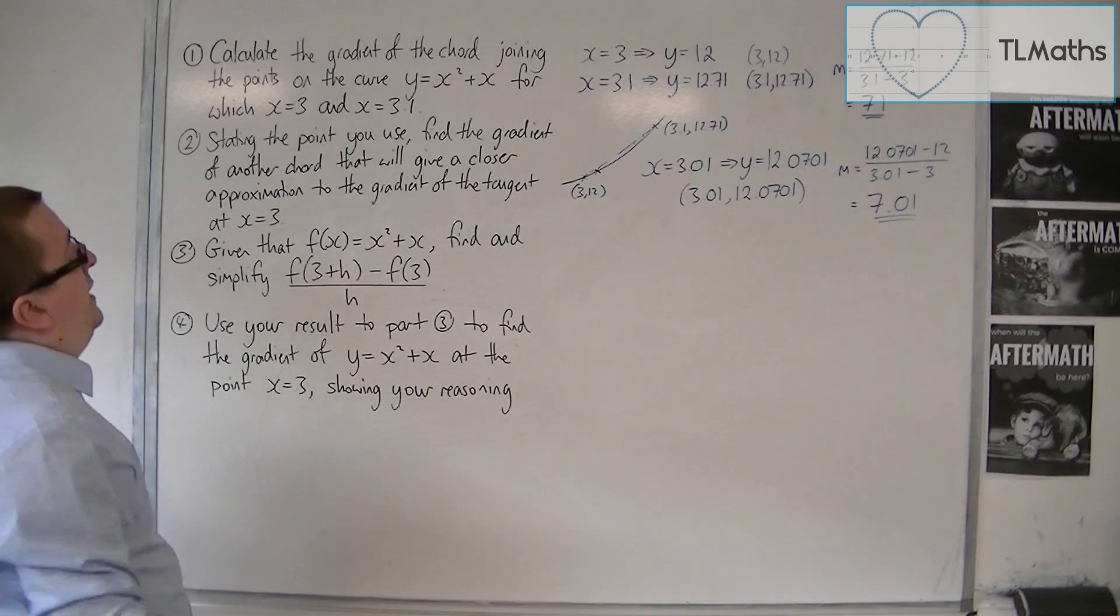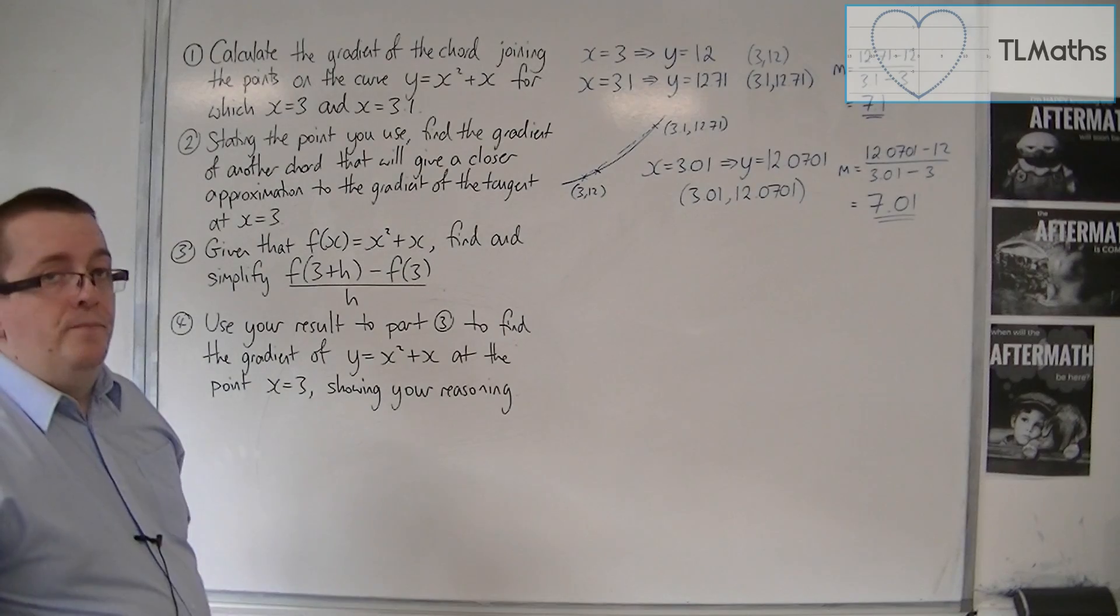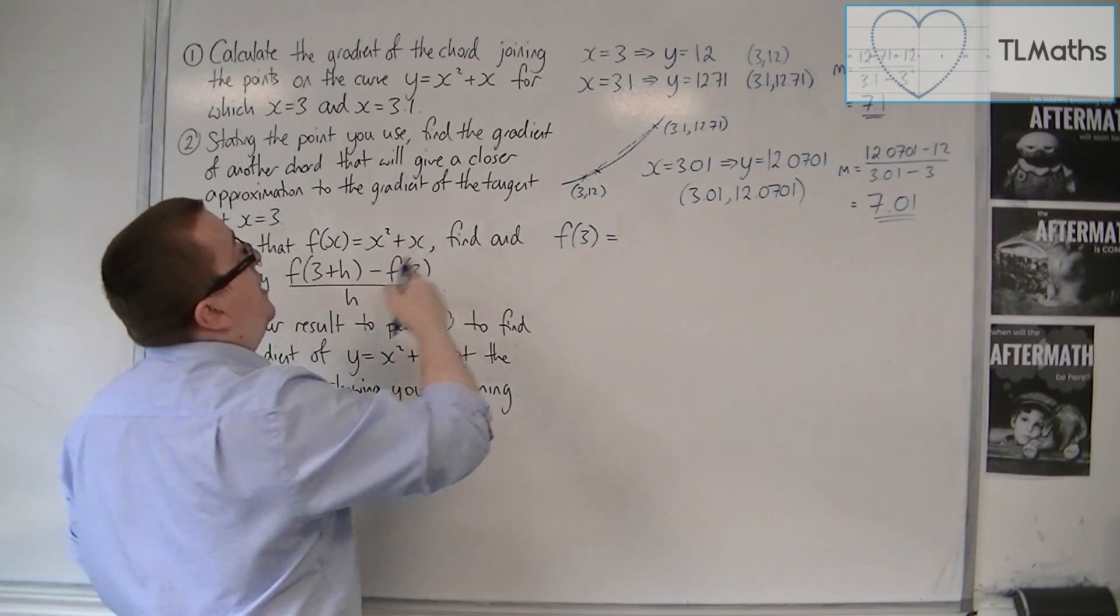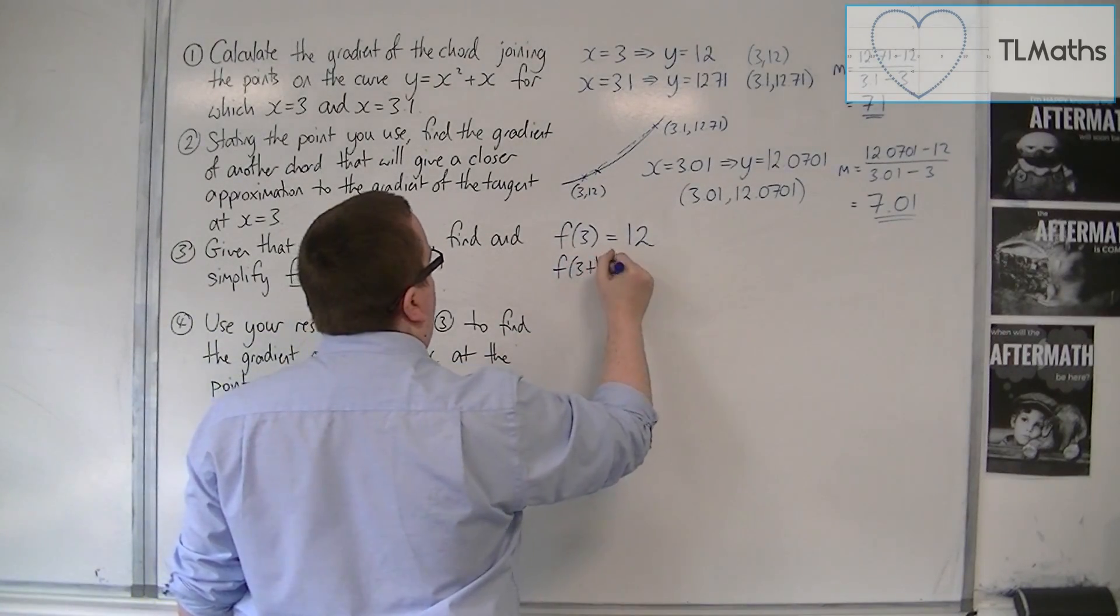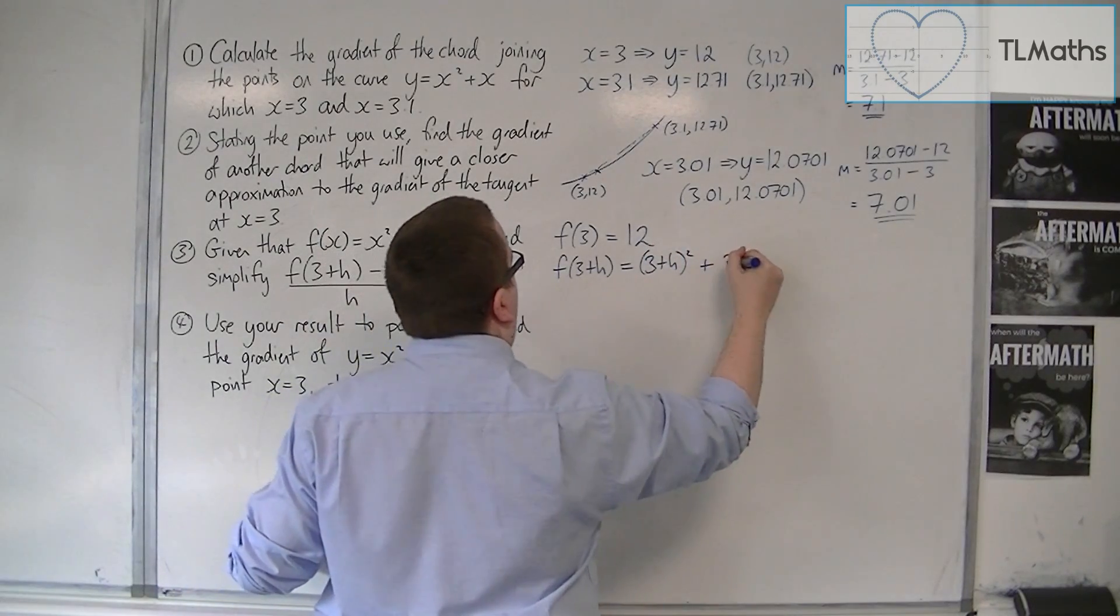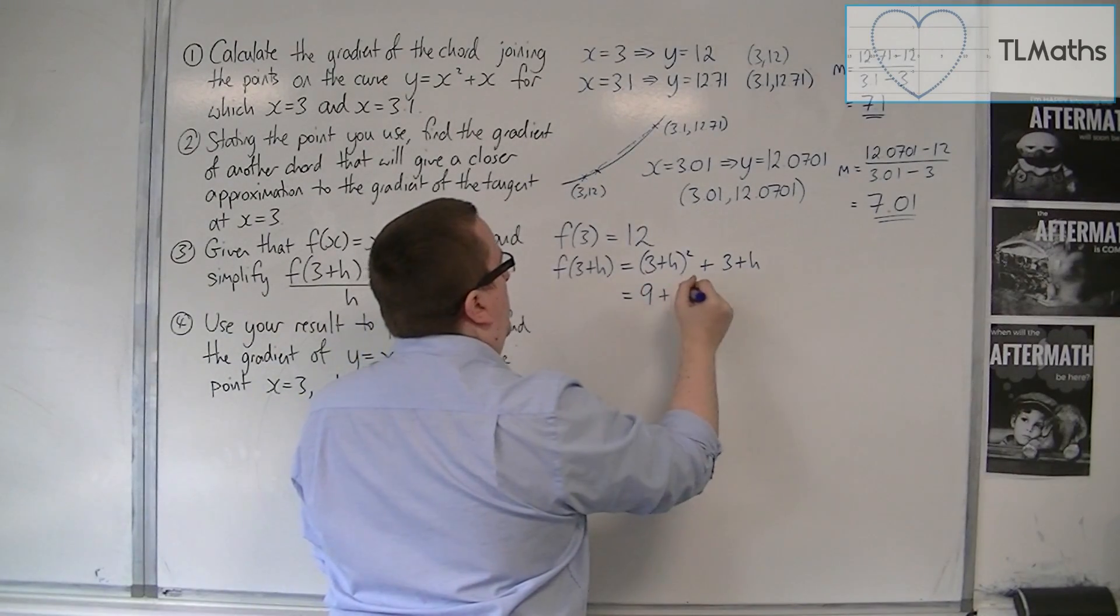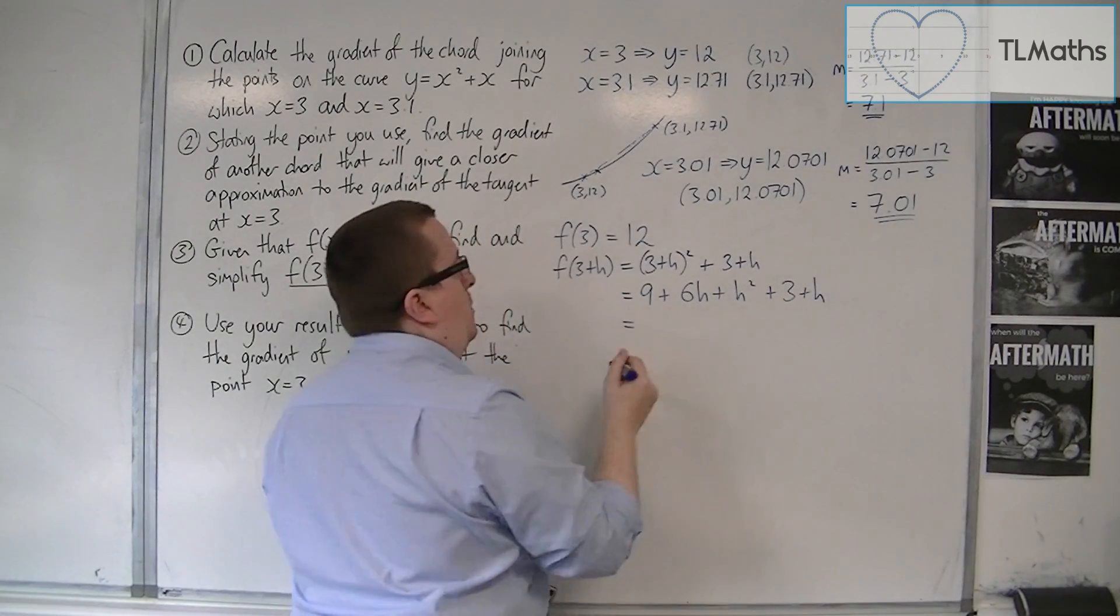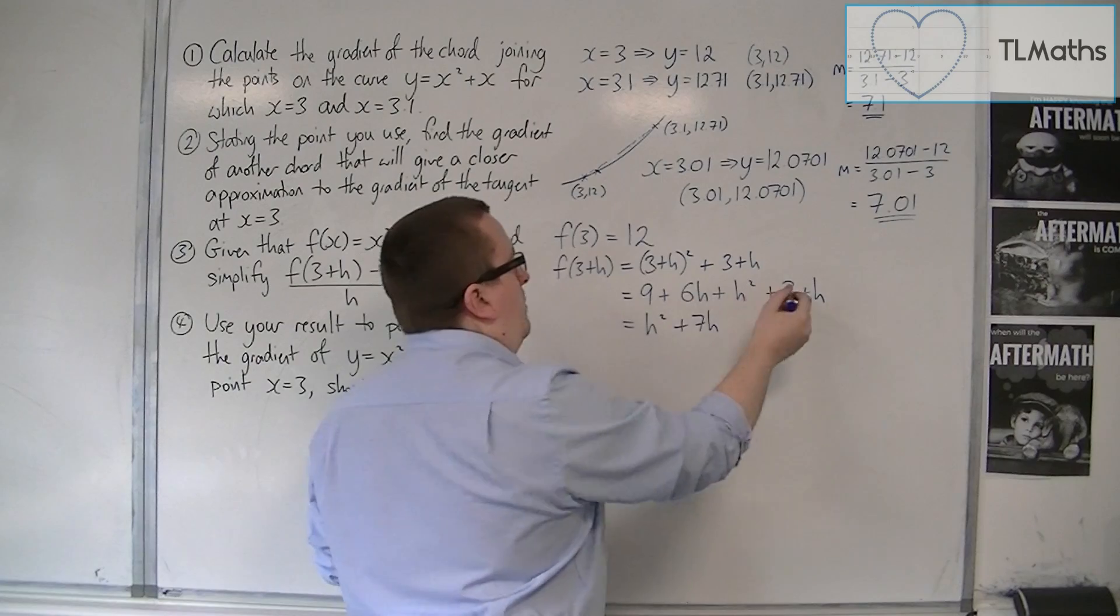Given that f of x is equal to x squared plus x, the curve in question, find and simplify f of 3 plus h, take away f of 3, divided by h. Now we already know what f of 3 is. That is just substituting 3 into that, and we know that that's 12. So we need to find f of 3 plus h. We replace each of the x's with 3 plus h, so we're going to have 3 plus h squared plus 3 plus h. So expand that bracket. We're going to get 9 plus 6h plus h squared plus the 3 plus the h. So we want to simplify that. So we've got the h squared, we've got 6h plus an h, so 7h, and we've got 9 plus 3, which is 12.